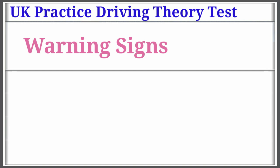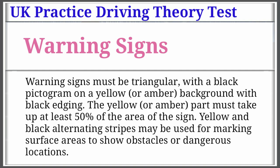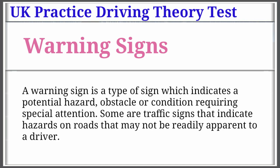UK Preface: Driving Theory Test Warning Signs. Warning signs must be triangular, with a black pictogram on a yellow background with black edging. The yellow part must take up at least 50% of the area of the sign. Yellow and black alternating stripes may be used for marking surface areas to show obstacles or dangerous locations. A warning sign is a type of sign which indicates a potential hazard, obstacle or condition requiring special attention. Some are traffic signs that indicate hazards on roads that may not be readily apparent to a driver.